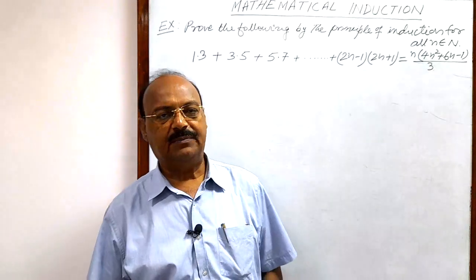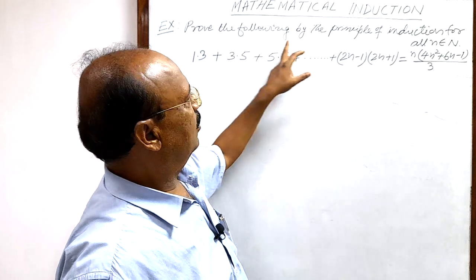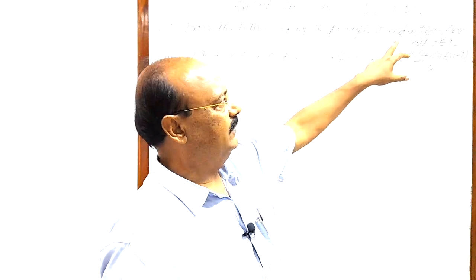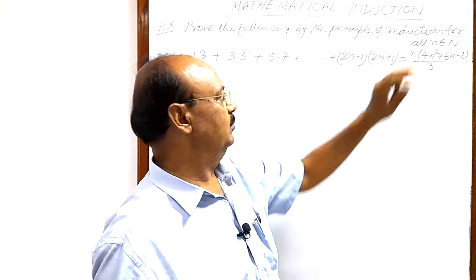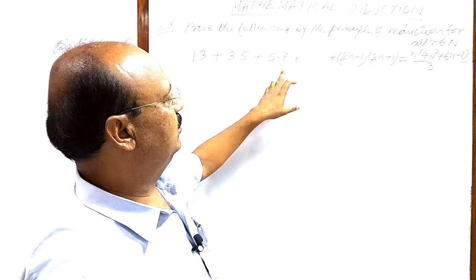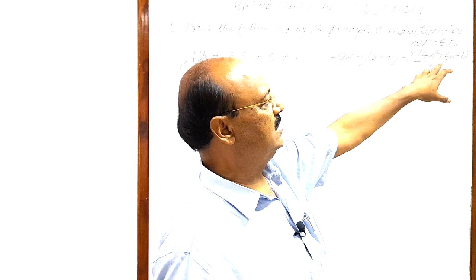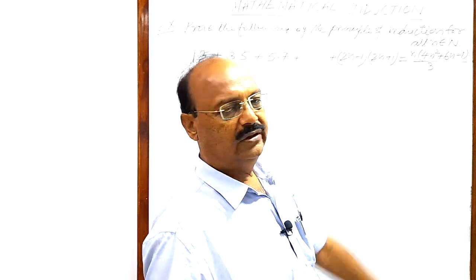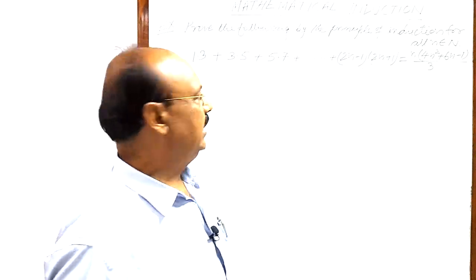Let us see a problem from the chapter Mathematical Induction. The question is: prove the following by the principle of induction for all n belonging to the set of natural numbers N. The statement is: 1×3 + 3×5 + 5×7 + ... up to (2n−1)(2n+1) is equal to n(4n² + 6n − 1) / 3. The total number of terms is n.